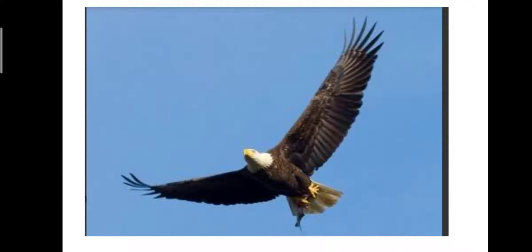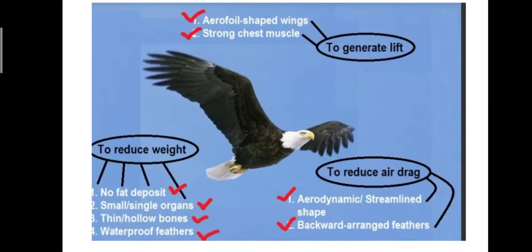Today's topic is about adaptation in eagles. In order to generate lift, an eagle has aerofoil-shaped wings, strong chest muscles, and to reduce weight: no fat deposits, small single organs, thin hollow bones, waterproof feathers, and to reduce air drag, an aerodynamic streamlined shape with backward-arranged feathers.